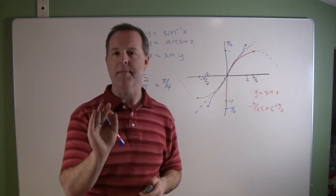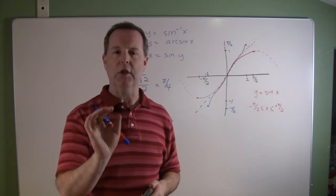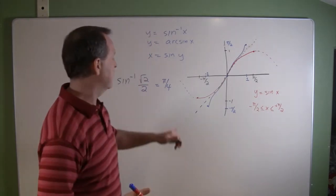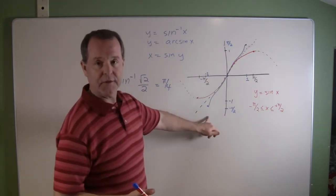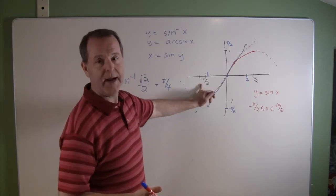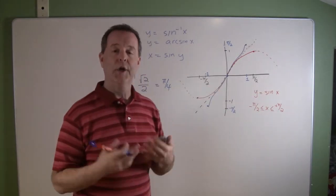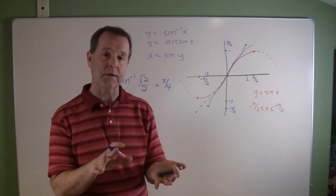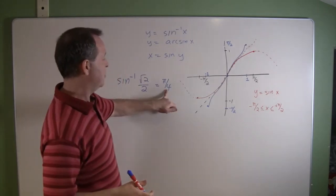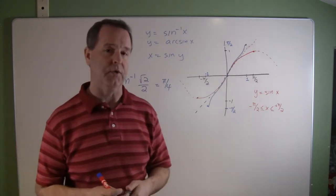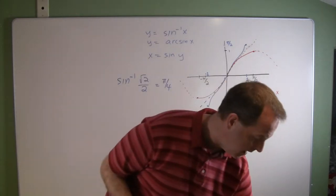The other thing I have to keep in mind is that we have to look at these within its restricted domain. Remember, the inverse's domain is restricted from negative pi halves to positive pi halves. So when I think about particular angles or the inverses, I have to make sure that my result is also within that restricted domain. Let's look at another example.